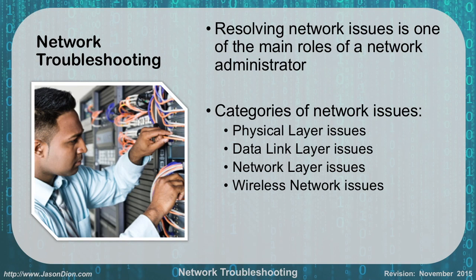Network troubleshooting. When we're dealing with network troubleshooting we're trying to resolve network issues, and it's one of the main roles we're going to have as a network administrator. We have different categories of network issues: the basic ones are physical layer (layer 1), data link layer (layer 2), network layer (layer 3), and wireless network issues, which can be a combination of any of those. We're going to talk about the CompTIA troubleshooting method and then go through a couple of example problems.